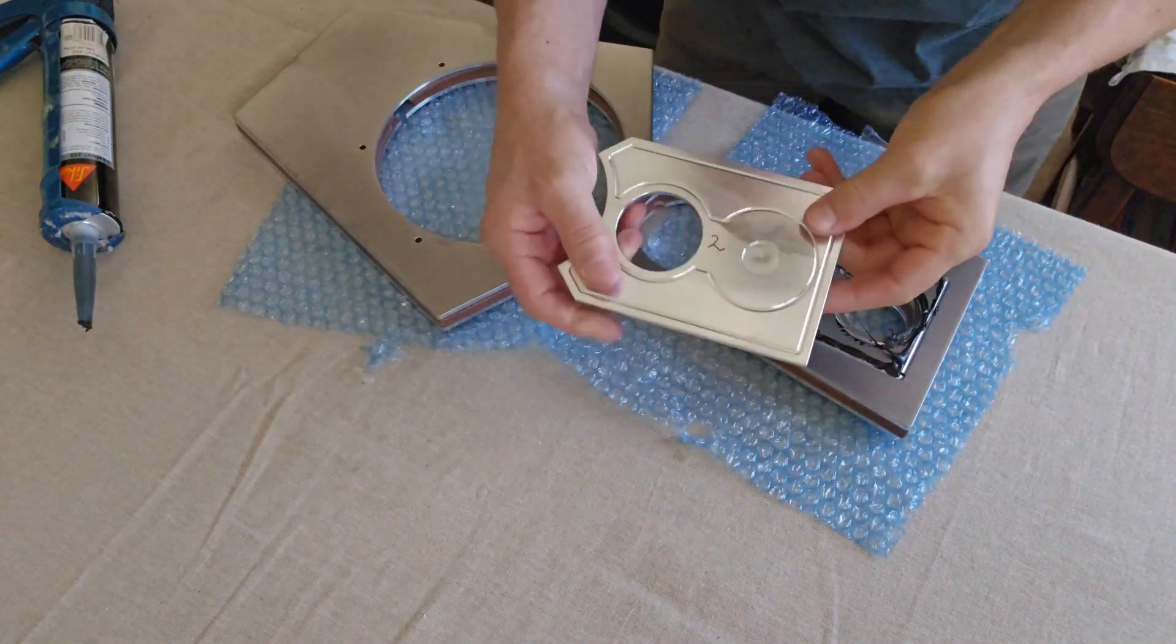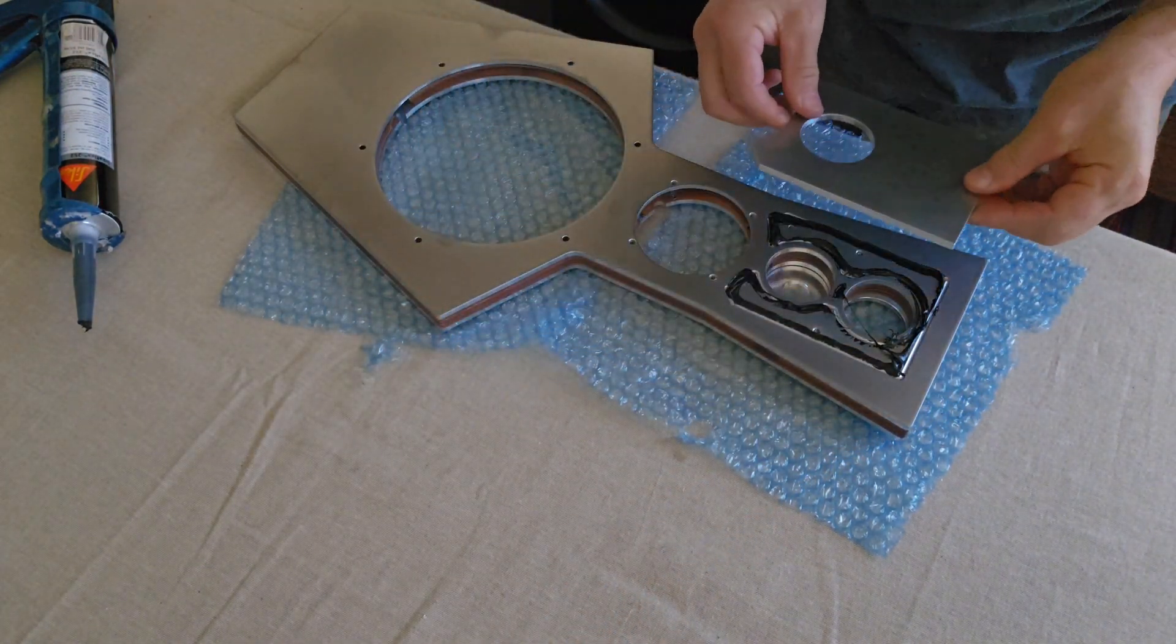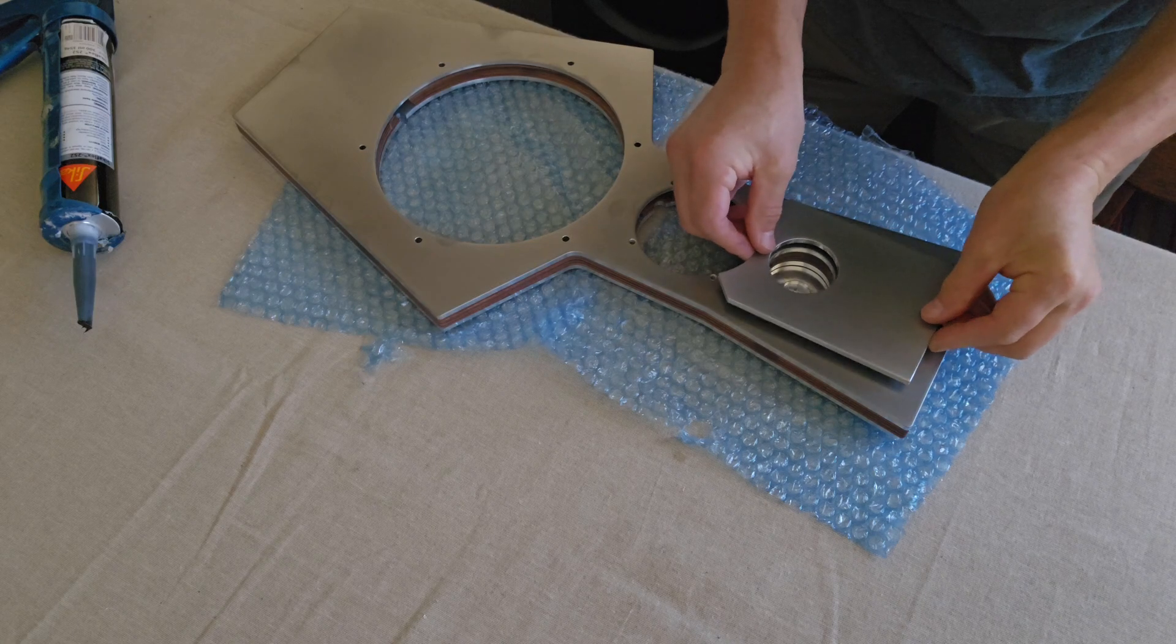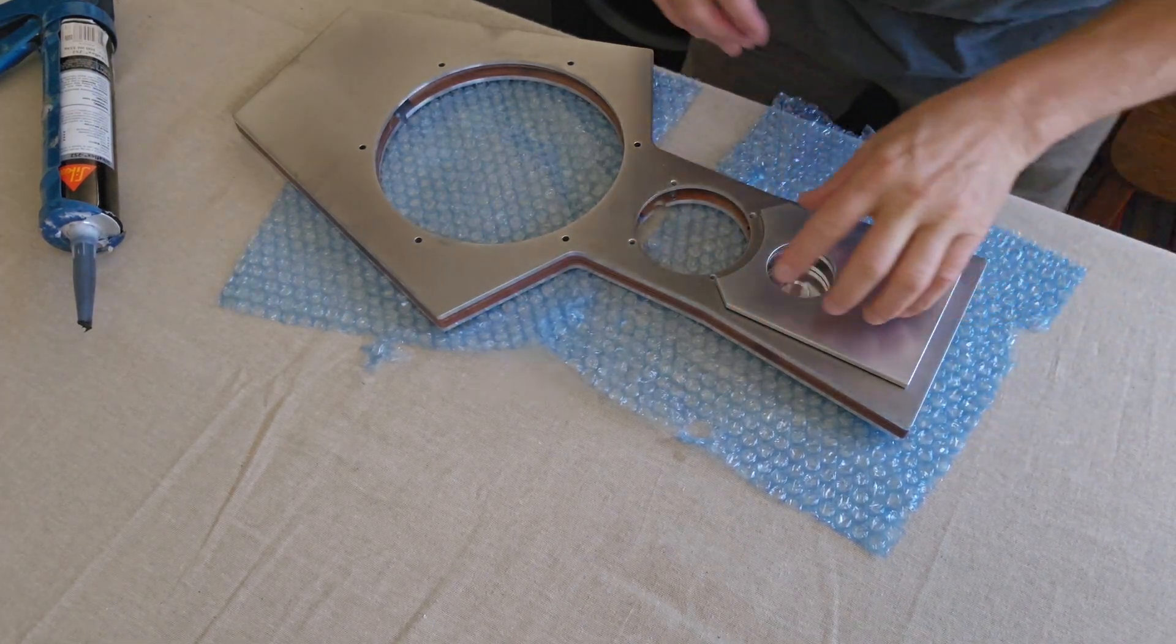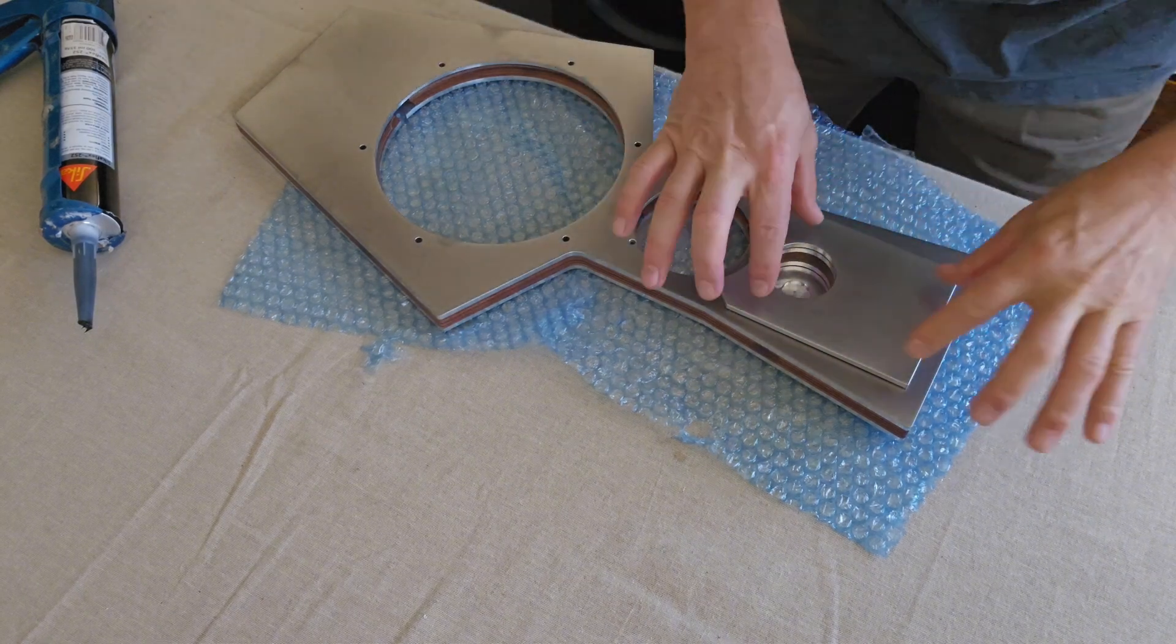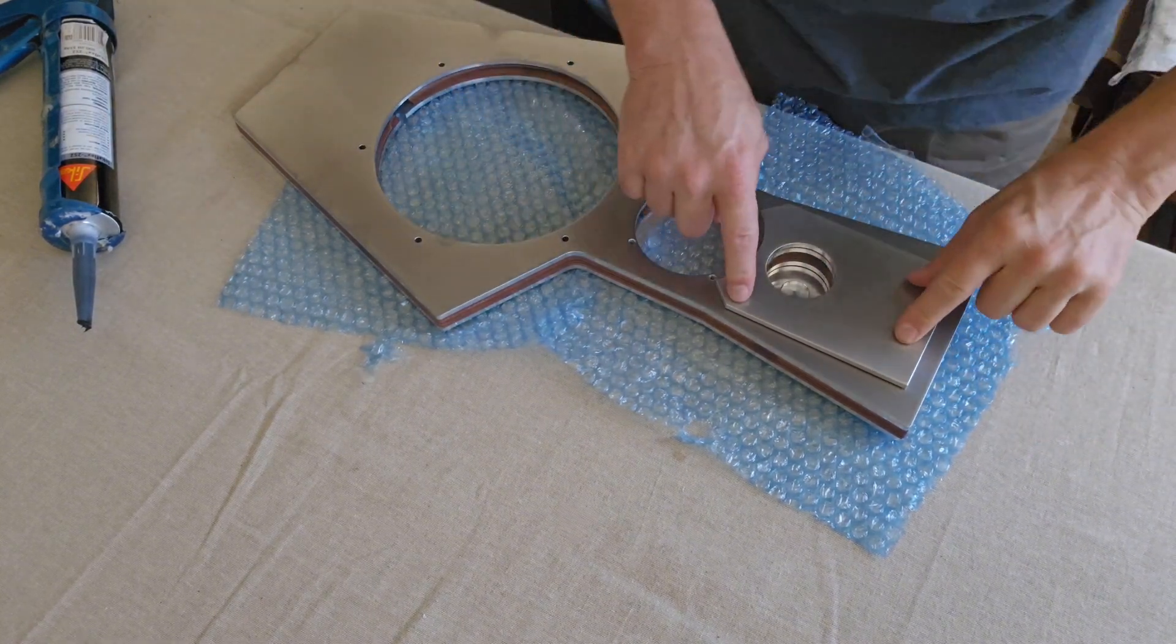So the dowels are here in place on this one. So we line the hole up and essentially everything sits in the dowels correctly, and we have that one in place.